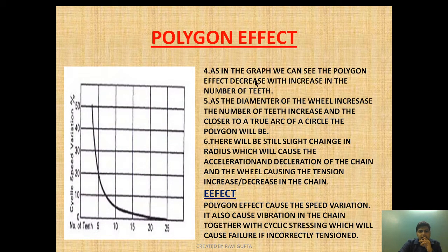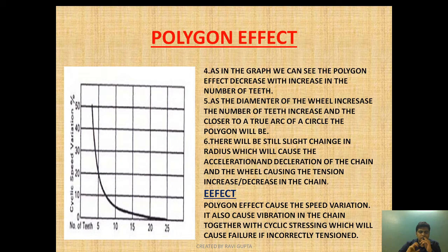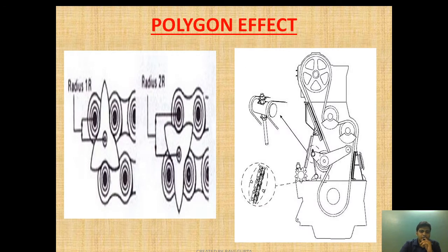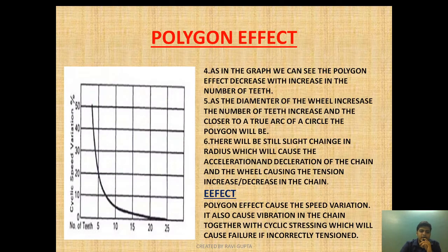As seen in the graph, the polygon effect decreases with increasing number of teeth. The number of teeth is on one axis and cyclic speed variation is on the other — the variation in speed that occurs because of the continuous acceleration and deceleration caused by the changing effective pitch radius. This speed variation decreases with increase in the number of teeth — they have an inverse relationship.